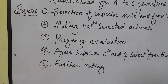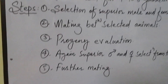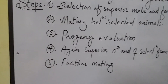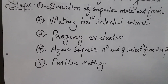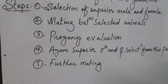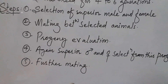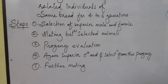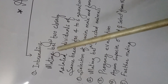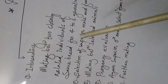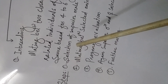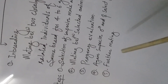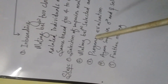The advantages and objectives of inbreeding: it increases homozygosity in the animal. If you want to evolve pure lines in any animal, you have to go for inbreeding because it increases homozygosity. You perform this step for four to six generations, and after four to six generations the progeny will have the superior quality of that cattle.